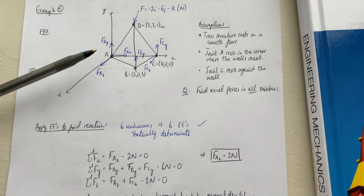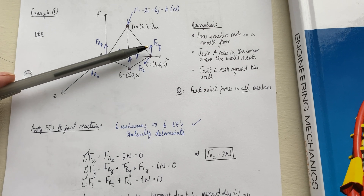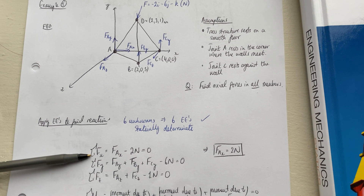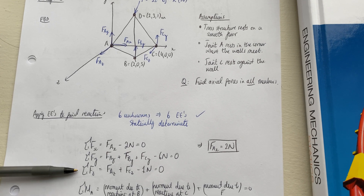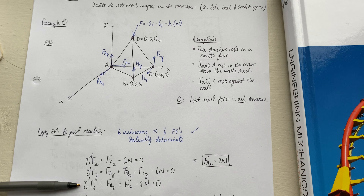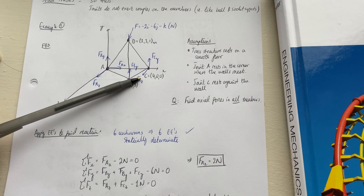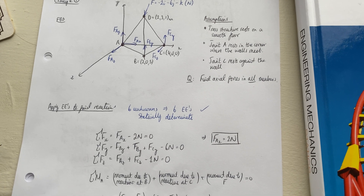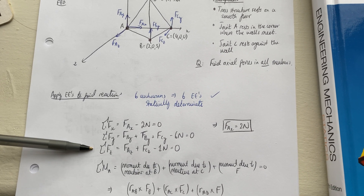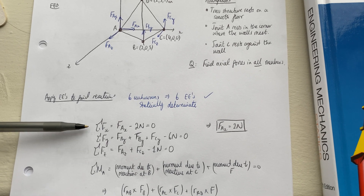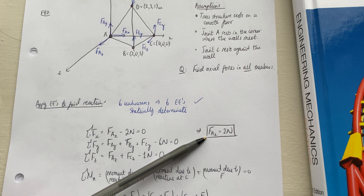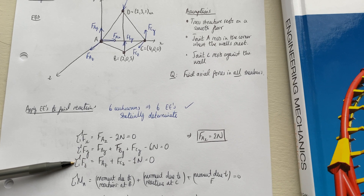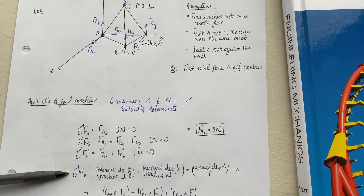In the x direction we have the x reaction force at A and also the x component of the force applied at D. In the y direction we have three reaction forces: F_Ay, F_By, and F_Cy, plus the y component of the force at D. In the z direction we have the reactions at A and C plus the z component of the force at D. From the x equation we can directly solve to find F_Ax equals 2 Newtons. The remaining equations have too many unknowns to solve at this stage.